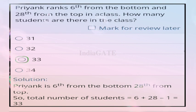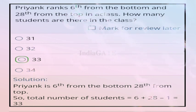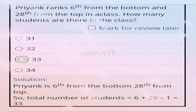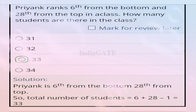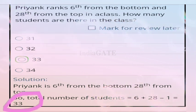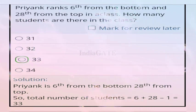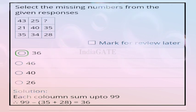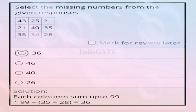Next question: Priyank ranks 6th from the bottom and 28th from the top in the class. How many students are there? Correct answer is option C, 33. Total students = 6 + 28 - 1 = 33.